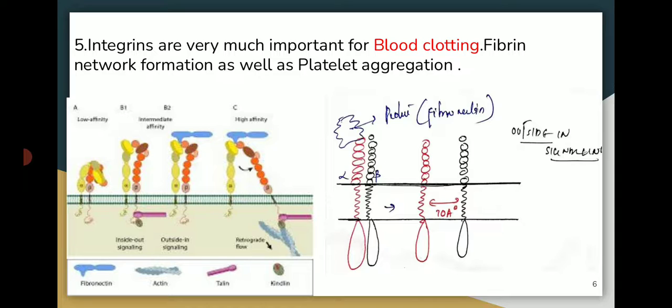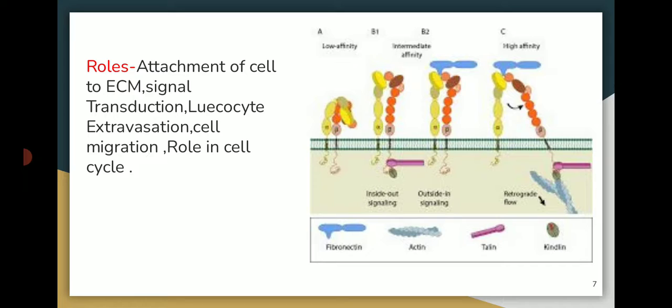Integrins are very important for blood clotting, fibrin network formation, and platelet creation. The roles of integrins include attachment of the cell to the ECM (extracellular matrix), signal transduction, leukocyte extravasation, cell migration, and an important role in the cell cycle.